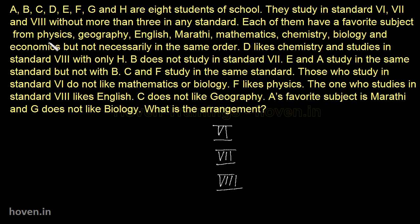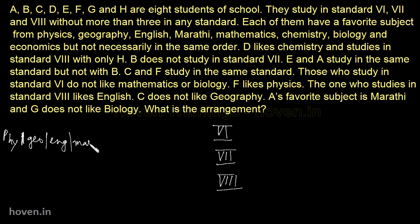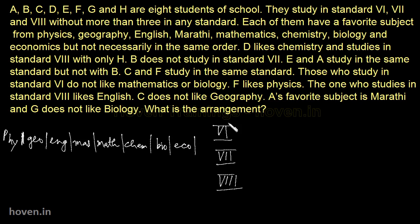We will start by writing the subjects. So let us write physics, then geography, then English, then Marathi, then maths, then chemistry, then biology, and then economics. So we have these subjects, these are the sections, and these are the students which have to be allocated.